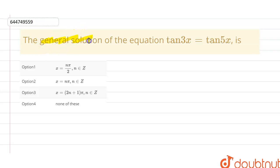The given question here is: find the general solution of the equation tan 3x equals tan 5x. We have to find the general solution for this equation.